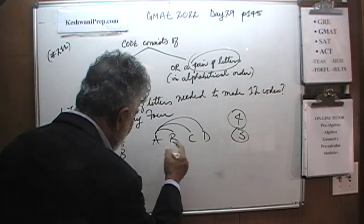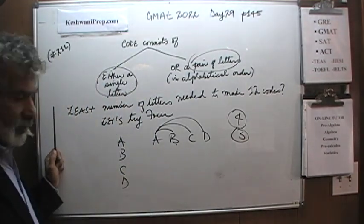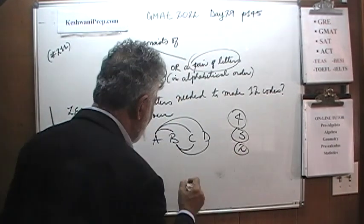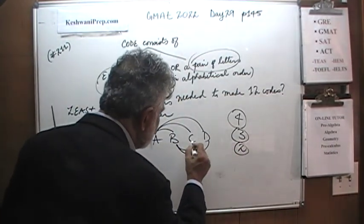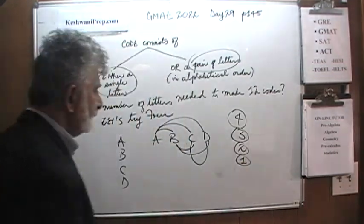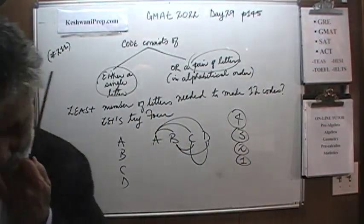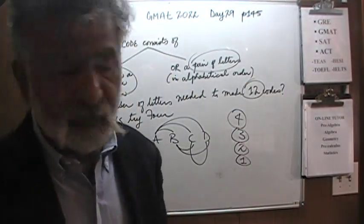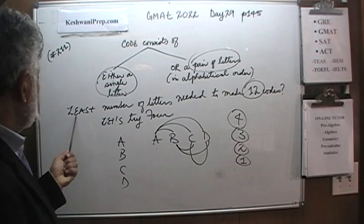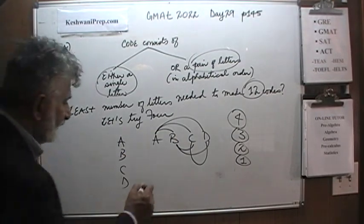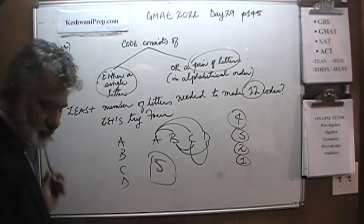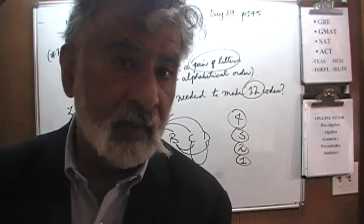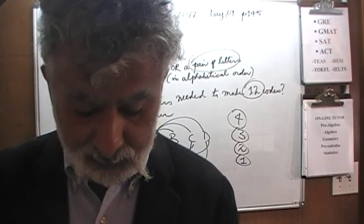Starting with B: we can't have BA because that's not in alphabetical order, so we have BC and BD — that's 2 more, giving us 9. And finally we can have CD — that's only 10 total. We need to identify 12 people, so 4 letters is not enough. Therefore the least number of letters we need is 5. If you try out 5, you'll find it identifies 15 different people.